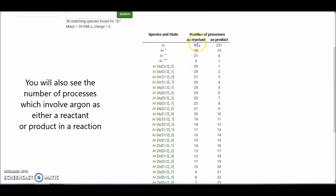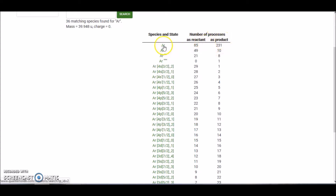There's also information on the number of processes which involve argon as a reactant or as a product. Let's click on one of these argon entries as an example.